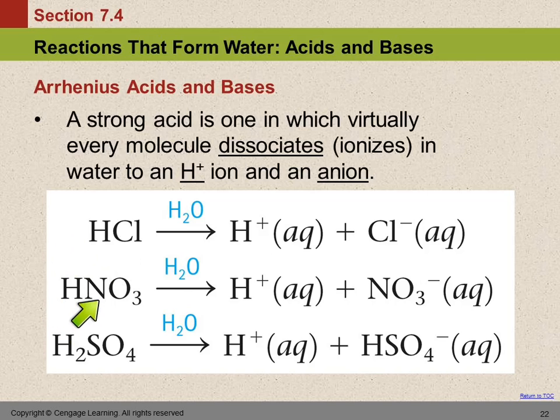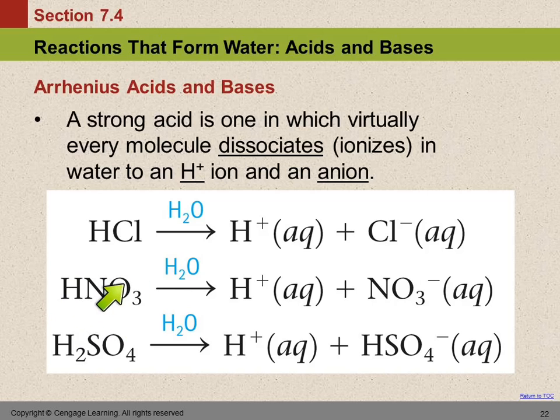HNO3 is also a strong acid. So we get the hydrogen ions coming off and the nitrate ions go around as a unit. These polyatomic ions stay together.